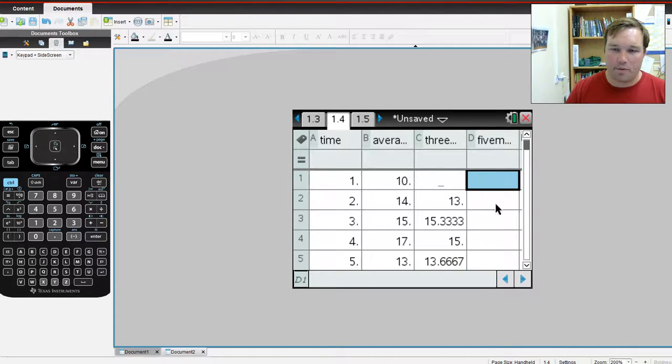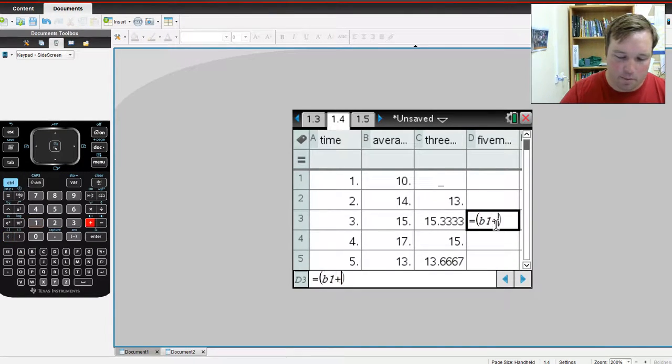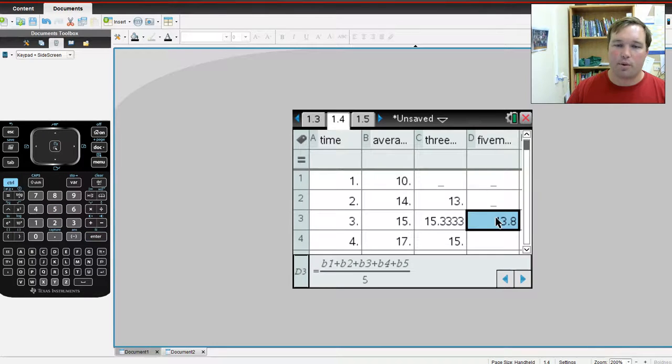So here, we ignore that, we ignore that, and we start here with equals. Then we want the first five values. So b1 plus b2 plus b3 plus b4 plus b5, close bracket, divided by, close bracket, divided by 5, 13.8. And note, as we drag down, what happens is, all of these here, b2, b3, b4, b5, b6, are increased by 0.1. So it applies the next five down.